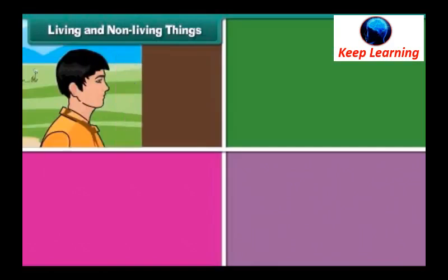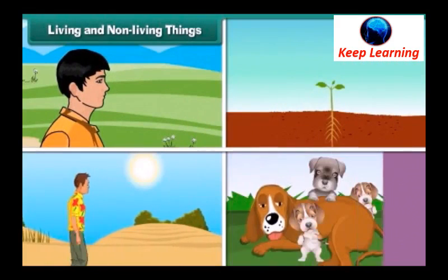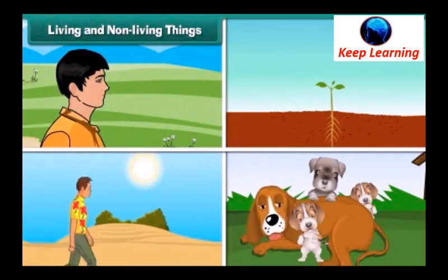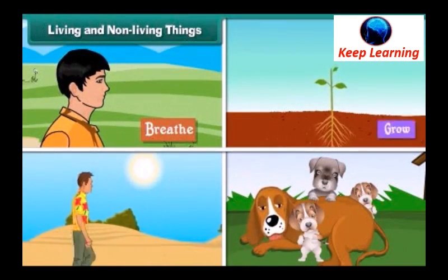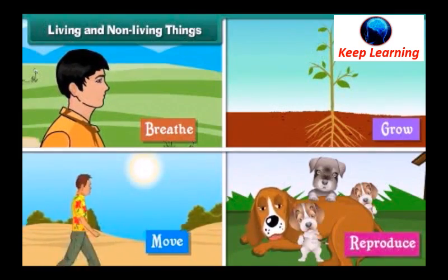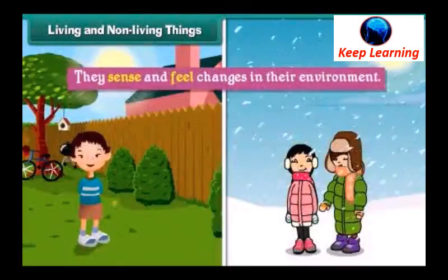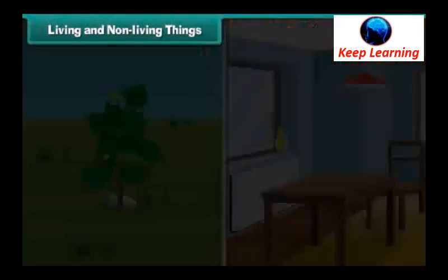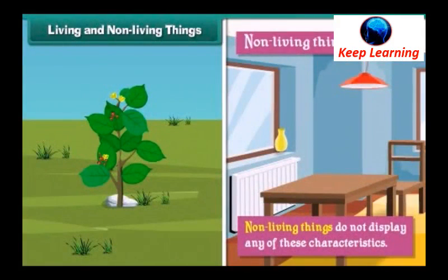Living things display the following characteristics: they breathe, they grow, they move, they reproduce, they sense and feel changes in their environment, and they eat and remove wastes from their body. Non-living things do not display any of these characteristics.